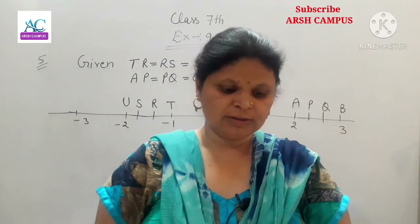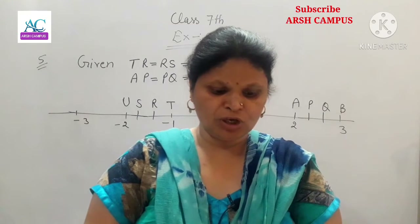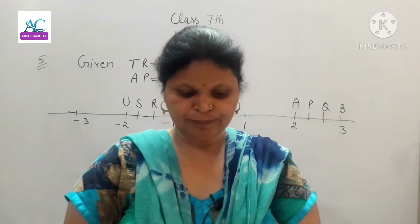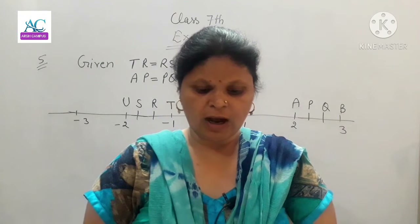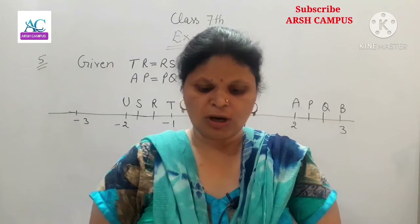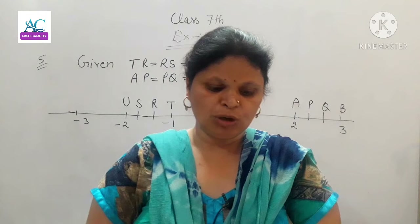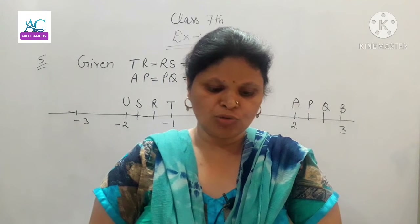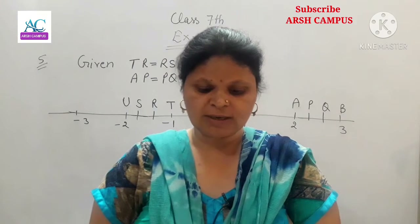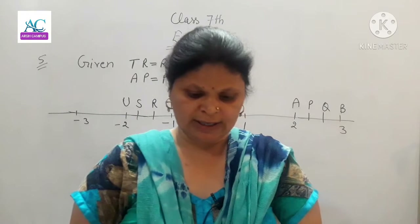Exercise 9.1, Sum No. 5. The points P, Q, R, S, T, U, A, and B on the number line are such that TR is equal to RS, RS is equal to SU, and AP is equal to PQ, PQ is equal to QB. Name the rational number represented by P, Q, R, and S.